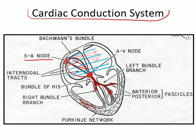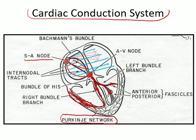The Purkinje networks are fast-conducting fibers that cause spread of current from the septum to the base of the ventricle in a relatively quick fashion, resulting in depolarization of the entire ventricle almost at the same time. With this much knowledge of the conduction system, you will be in a very comfortable position to read the ECG.